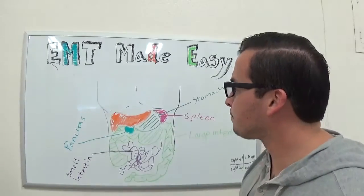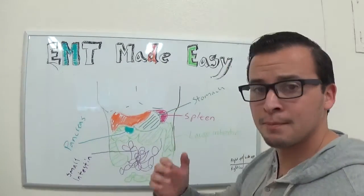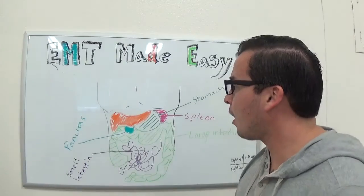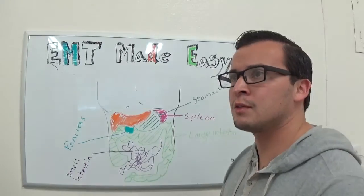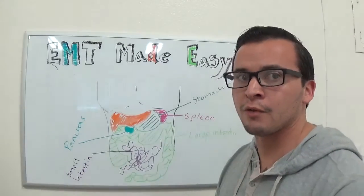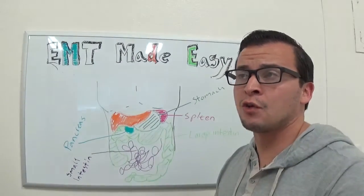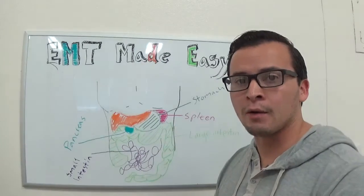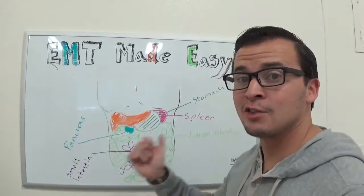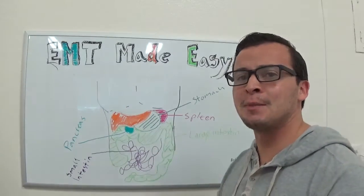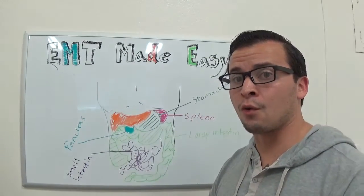So we have solid organs and we have hollow organs. Now the biggest difference between solid and hollow organs, important to us as EMTs working in the field for EMS, is that hollow organs aren't very vascular - they're not gonna bleed out as bad. On the other hand, your solid organs are very vascular, so that means they have a lot of vessels, a lot of blood in them. If you injure those organs or rupture them, they're gonna bleed a lot.